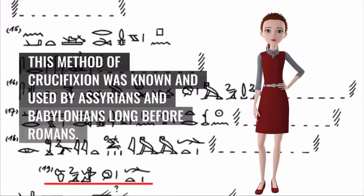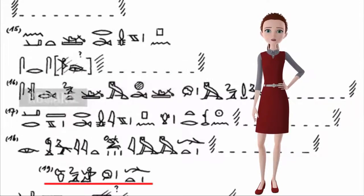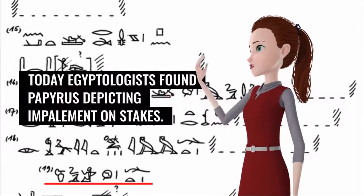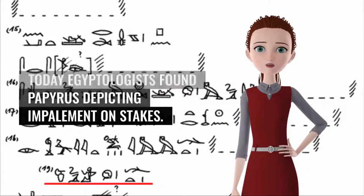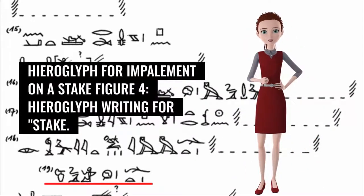This method of crucifixion was known and used by Assyrians and Babylonians long before Romans. Today, Egyptologists found papyrus depicting impalement on stakes. Hieroglyph for impalement on a stake, figure 4, hieroglyph writing for stake.